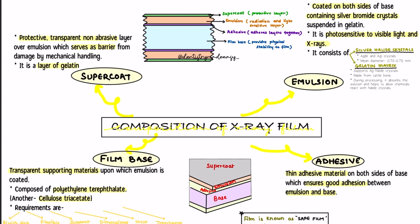The first component is known as the supercoat. The next is the emulsion, due to which the image is formed on the x-ray film. The third is the adhesive, which adheres the other components of the film together. The fourth component is known as the film base. We are going to see each of these components in depth.